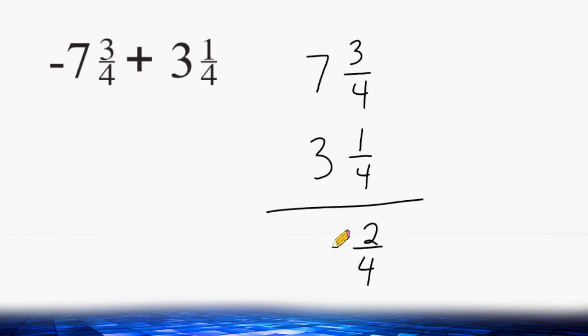And of course, 7 minus 3 is 4. Now what we can do is reduce the fraction 2 quarters to 1 half, so we have 4 and 1 half.